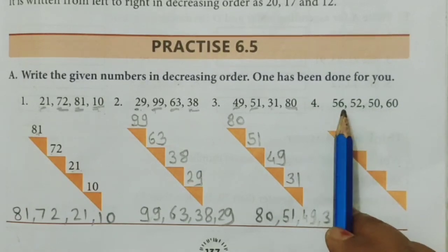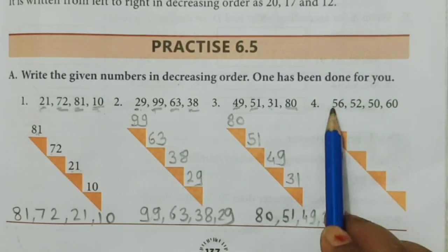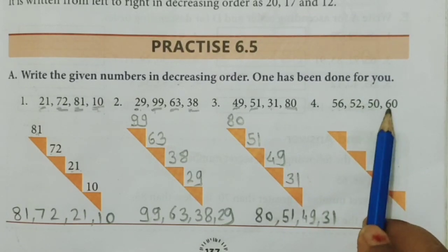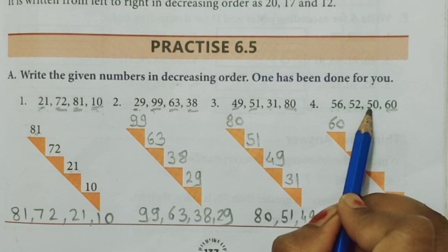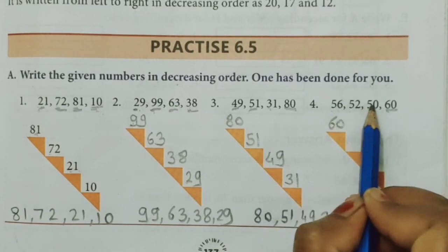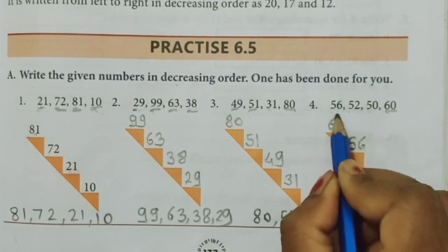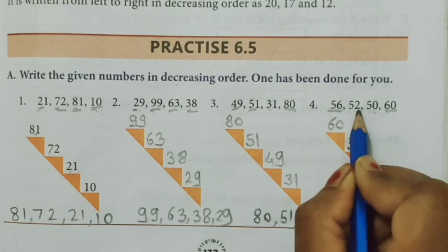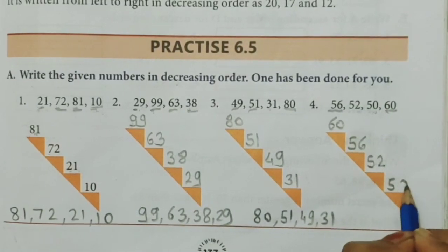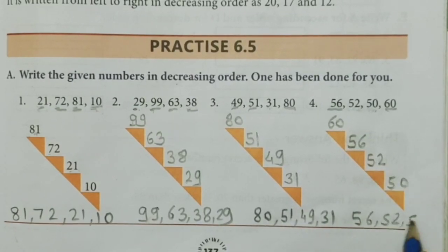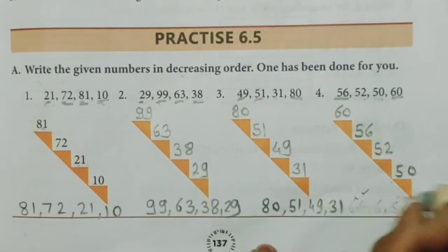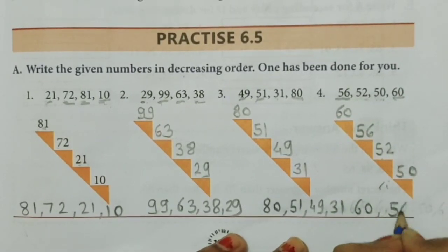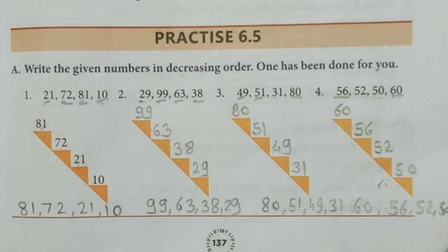Last example: 56, 52, 50 and 60. Tens digits are 5, 5, 5 and 6. Greatest is 6, so 60 is first. From the remaining three numbers, all have tens digit 5 — look at ones: 6, 2 and 0. Greatest is 6, so 56 is next. Then from 2 and 0 — 2 is greater, so 52 is next. Last number is 50. Descending order: 60, 56, 52 and 50. This is all about the descending order and ascending order of the numbers.